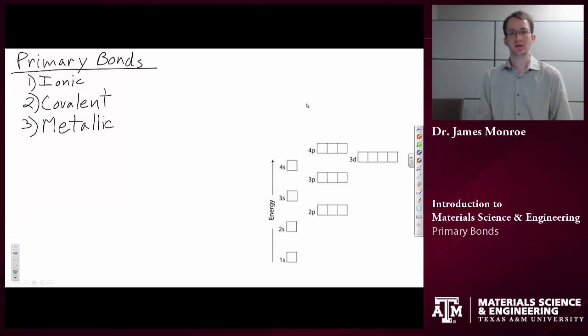Each of these different types of bonds are created by the way the electrons are associated with individual atoms.